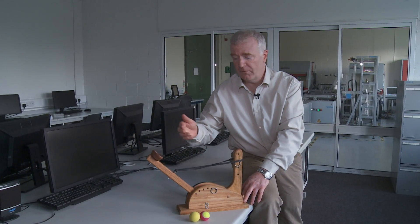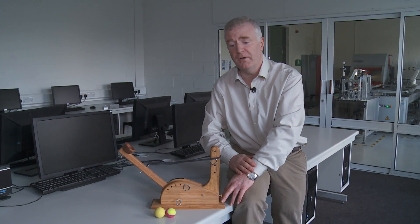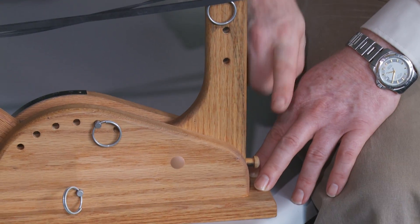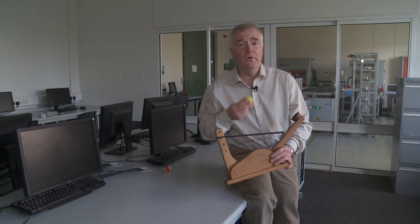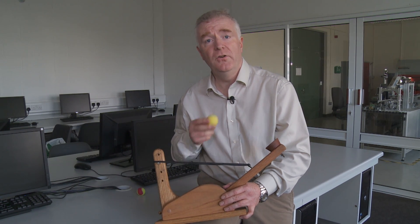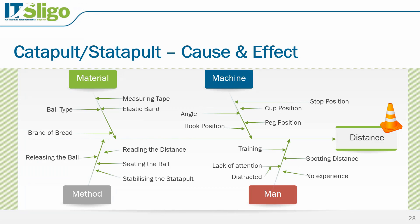In the case of the statapult, the response is the distance the ball travels. Factors affecting this response include the cup position, pin position, stop position, start angle, and the type of ball propelled. The objective of this process is to achieve a specified target distance. We can relate this to a cause and effect diagram identifying material, machine, man, and method influences. Specifically, we are going to experiment with two factors: the stop position and the start angle.